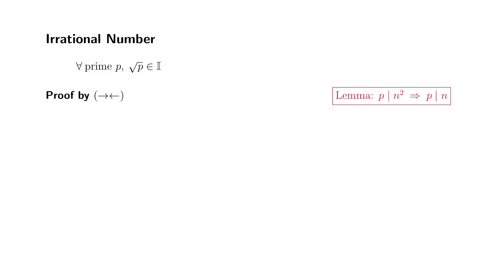So since it's a proof by contradiction, we're going to assume the opposite of what we want to say. So we're going to assume that the square root of p is rational.